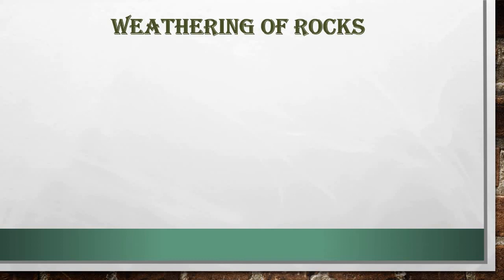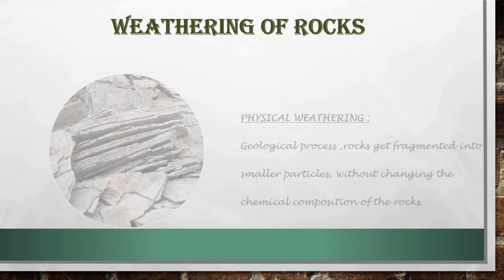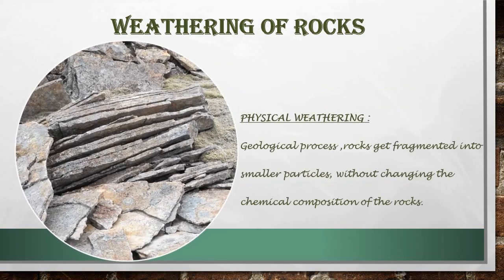As we studied, soil is formed by the weathering of rocks, and weathering is of three types. The first is physical weathering. Physical weathering is the geological process when rocks get fragmented into smaller particles without changing the chemical composition of rocks. This primarily happens due to fluctuating temperatures — that is, temperatures going up and down — causing the rocks to break apart.